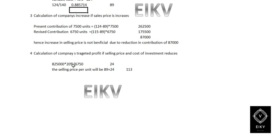For the computation, we take 8 lakh 25,000 multiplied by 20 percentage, which gives 1 lakh 65,000. Dividing 1 lakh 65,000 by 6,750 units gives 24 per unit. So the variable cost of 89 plus 24 per unit gives a target cost of 113 rupees per unit. Thanks for watching this video; if you find it helpful, please subscribe to the channel.